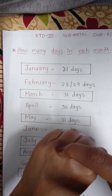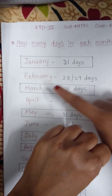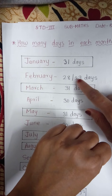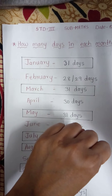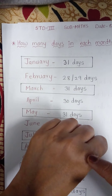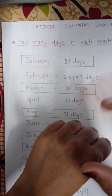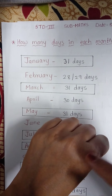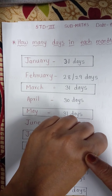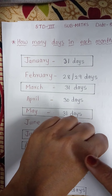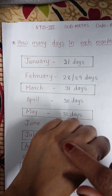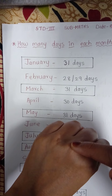You have to remember that only in February, 28 or 29 days will be there. Now, see here — in January, how many days? 31. So we start: January, 31 days. Then February. Then March — how many days? 31.